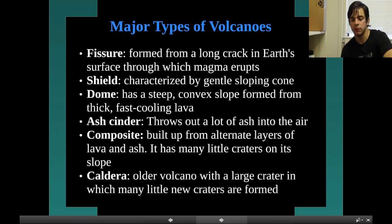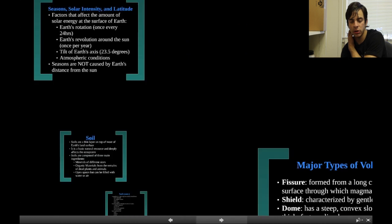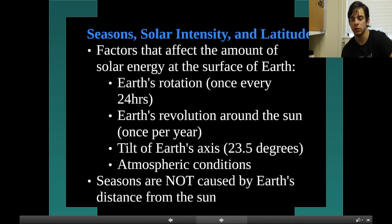Major types of volcanoes: Fissure — formed from a long crack in Earth's surface through which magma erupts. Shield — characterized by a gentle sloping cone. Dome — has a steep, convex slope formed from thick, fast-cooling lava. Ash cinder — throws out a lot of ash into the air. Composite — builds up from alternate layers of lava and ash, and has many little craters on its slope. Caldera — an older volcano with a large crater in which many little new craters are formed.